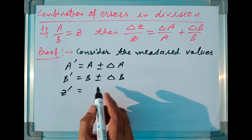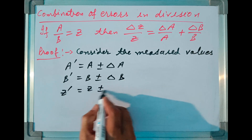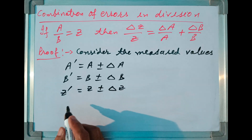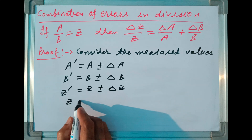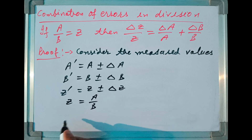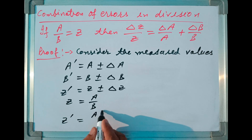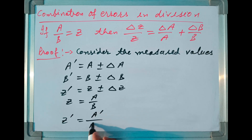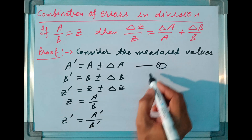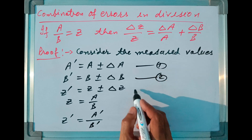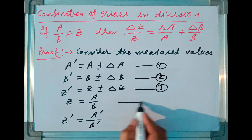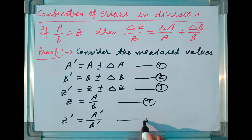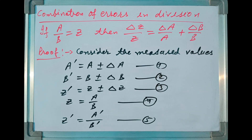Z dash is equal to Z plus or minus Delta Z. Also, Z is equal to A upon B, and the measured value of Z equals the measured value of A divided by the measured value of B. Let me call these equation number one, two, three, four, and five. Using these five equations we can prove the rule for combination of errors in division.